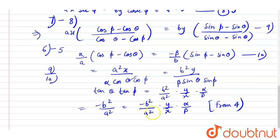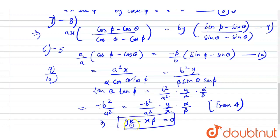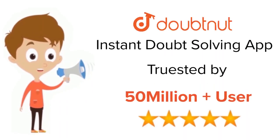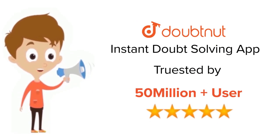Hence we get αy − βx = 0, which is our required locus. Hope you all got it — thank you and have a nice day. For classes 6 to 12, IIT JEE and NEET level content, trusted by more than 5 crore students — download the Doubtnut app today.